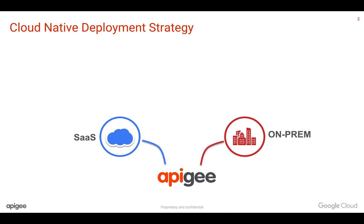Apigee Edge is also available on-premises. That means we give you the software which you can install and deploy on your own private cloud data centers or on-premise machines. You can install the Apigee Edge platform on your own data center, even inside demilitarized zones or airgap servers. You can also run Apigee Edge without even connecting to the internet.